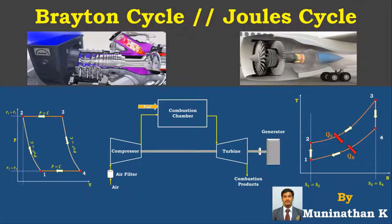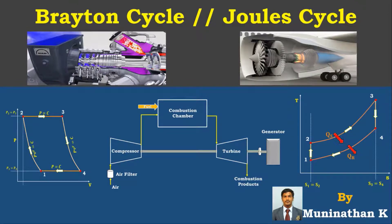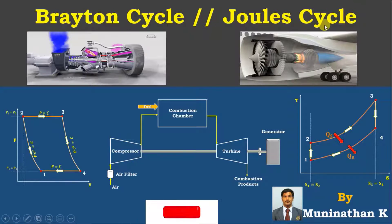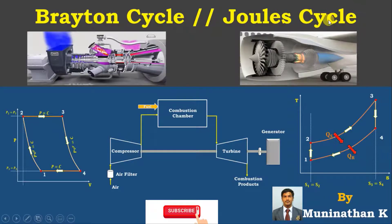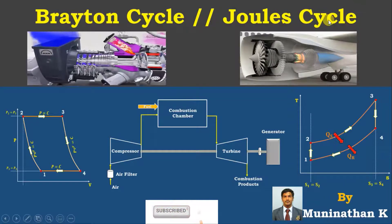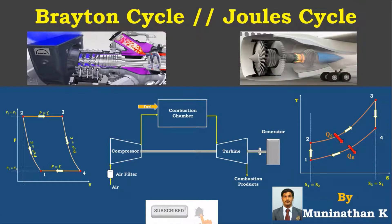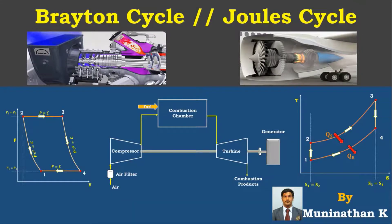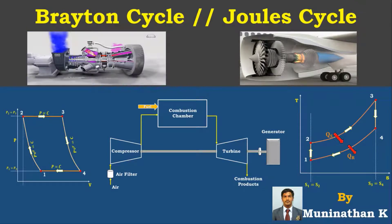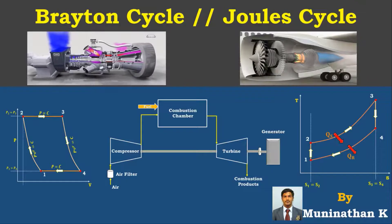Today's topic is about the Brayton cycle. The Brayton cycle is an ideal cycle for gas turbine engines. It is also known as the Joule cycle, gas turbine cycle, or constant pressure cycle. It is one of the gas power cycles. In this lecture, we will discuss how to derive the efficiency expression of a Brayton cycle.